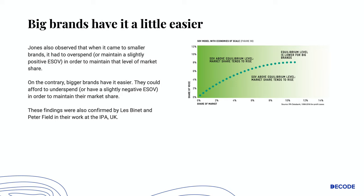There is something else that Jones discovered which is extremely fascinating. He observed that when it came to smaller brands, they had to overspend or maintain a slightly positive ESOF in order to maintain their level of market share. On the contrary, bigger brands have it much easier — they could afford to underspend or have a slightly negative ESOF in order to maintain their market share. These findings were also reconfirmed by Bennett and Field in their work with the IPA.